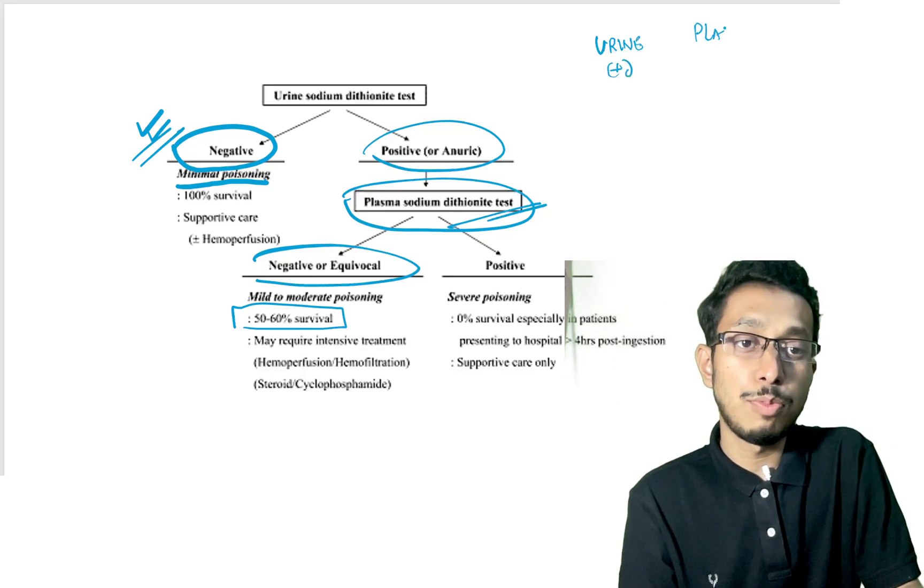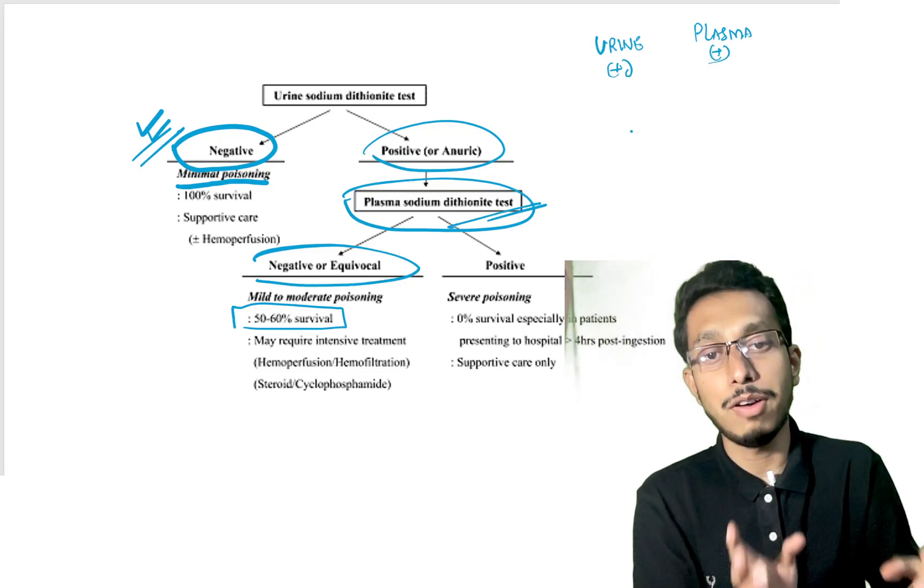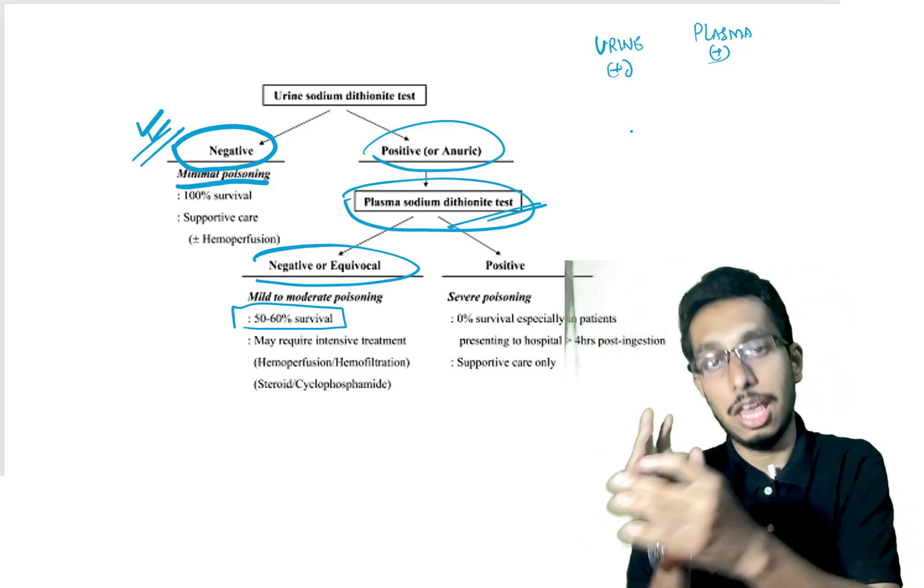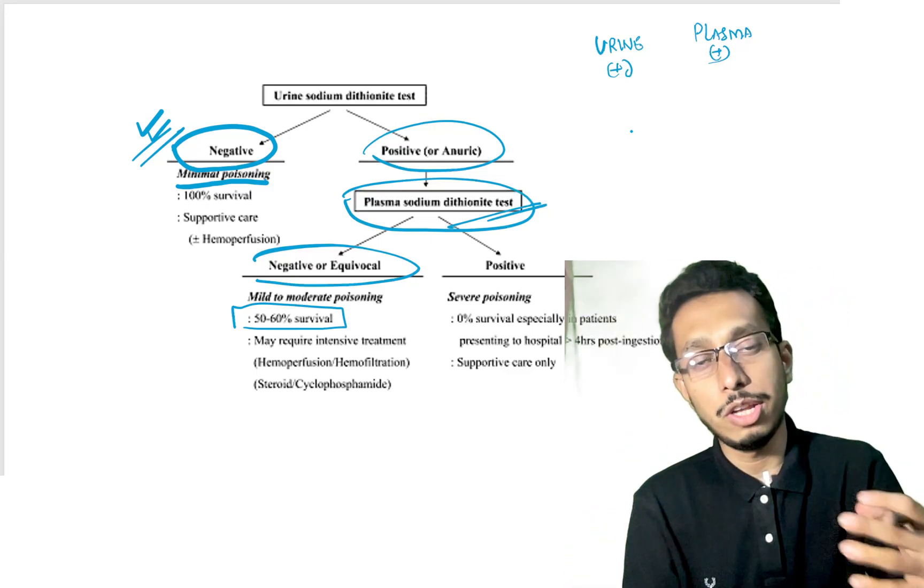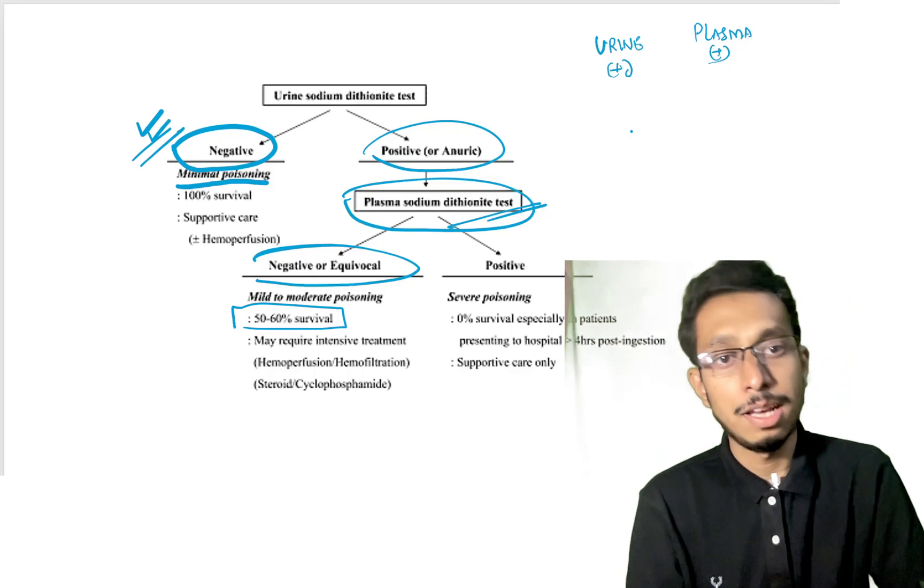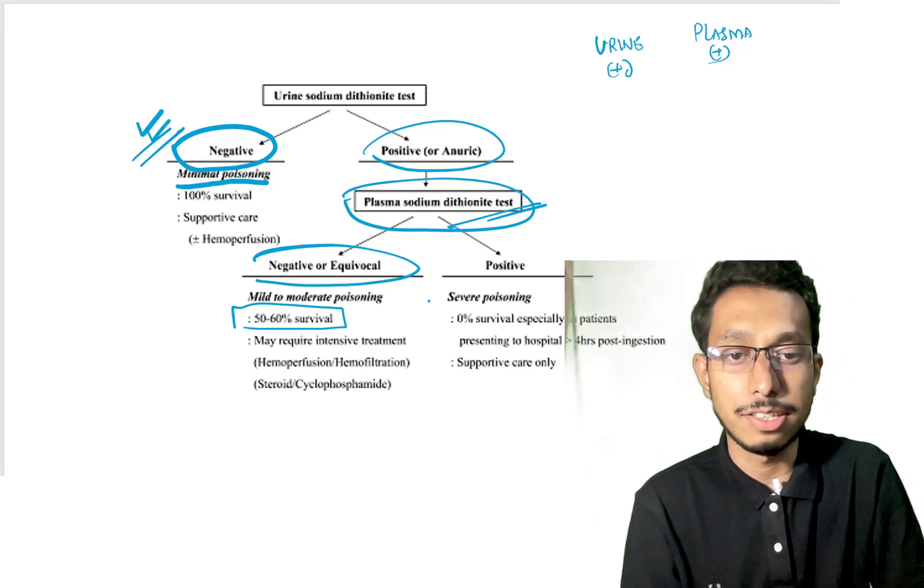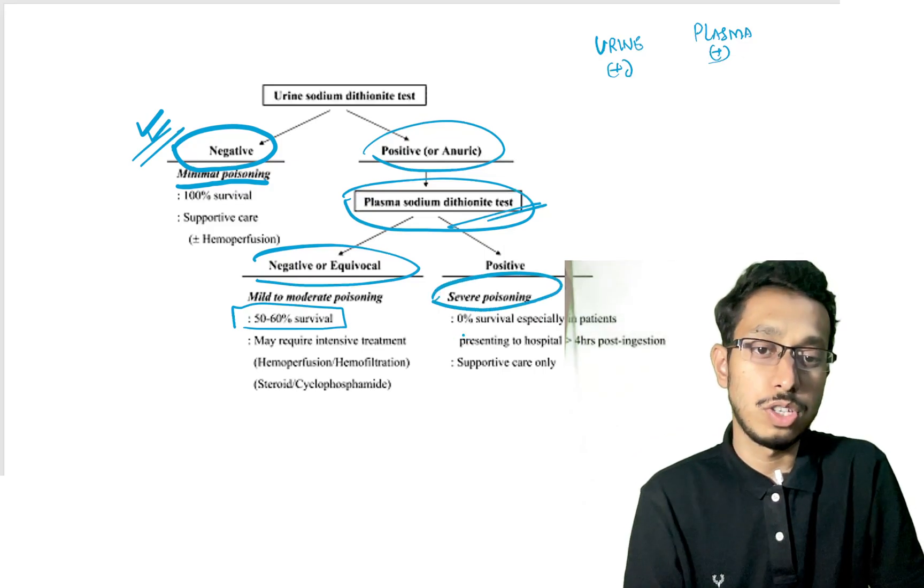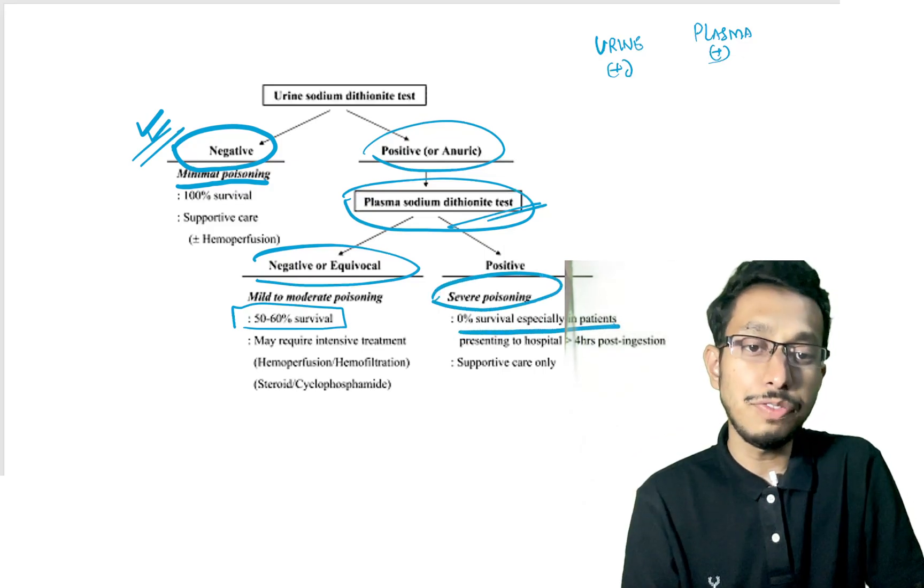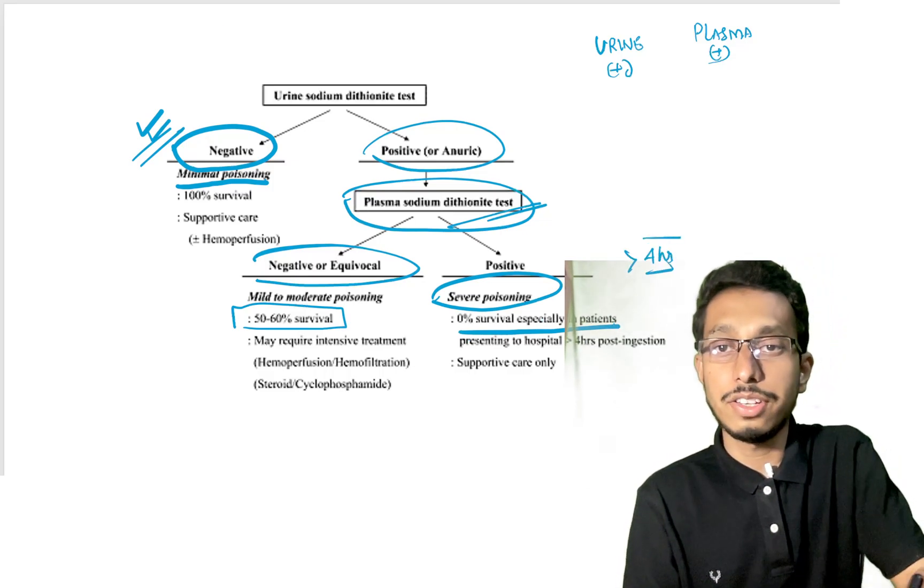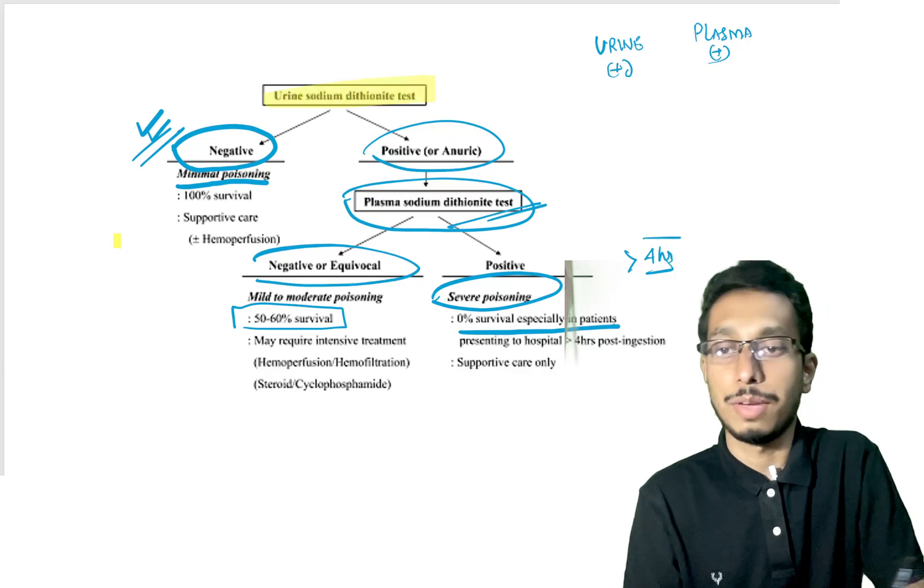If both urine and plasma are positive, there's enough poison in the blood and urine. The body will take a lot of time to metabolize and excrete it. This is a dangerous situation with severe poisoning. Zero percent survival in patients with severe poisoning who present after four hours of ingestion. This test can be used as a prognostic marker.